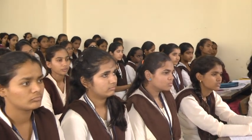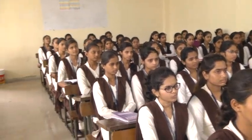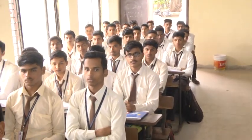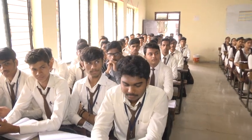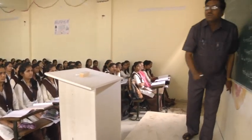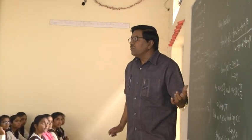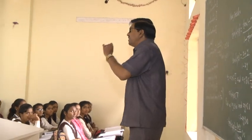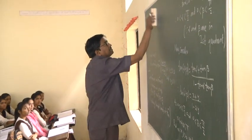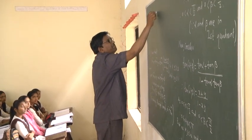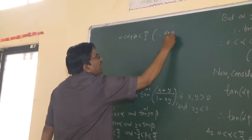Therefore, tan(alpha plus beta) equals x plus y upon 1 minus x times y. Observe that x and y are positive, therefore x plus y is positive, and 1 minus xy is positive. Positive upon positive is positive. So tan(alpha plus beta) is greater than 0. Therefore, alpha plus beta is in the first quadrant, because if tan(alpha plus beta) is positive and alpha plus beta is acute, the angle lies in the first quadrant. Therefore, alpha plus beta is greater than 0 but less than pi by 2.